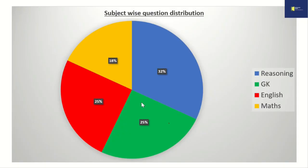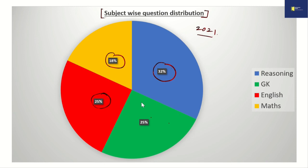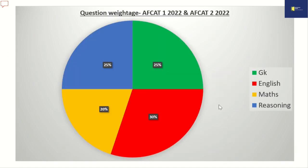Now let us see the subject-wise question distribution that was in place till 2021. We used to get 32 questions from reasoning, 18 questions from maths, 25 questions from English, and 25 from GK. That means we were getting 100 questions in total, and we still are getting 100 questions.